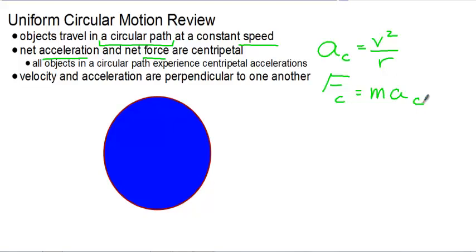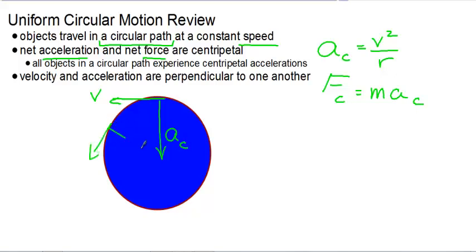As the object travels around, that v we're talking about is the linear or tangential speed, which would go off in a straight line. The acceleration is always toward the center, because as the object travels around, its direction is continually changing. If we're over here again, our acceleration is still toward the center because we're changing direction as we go along.